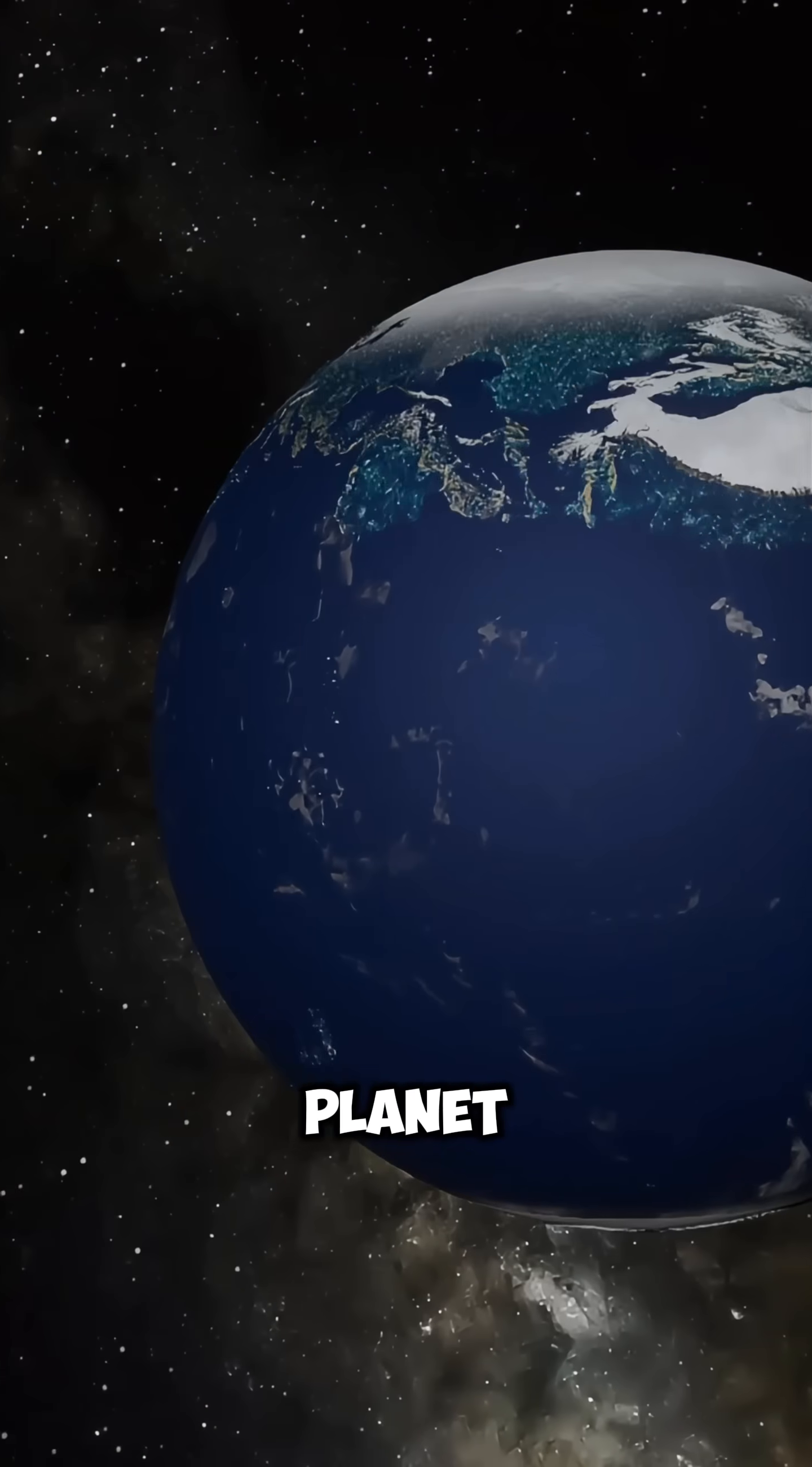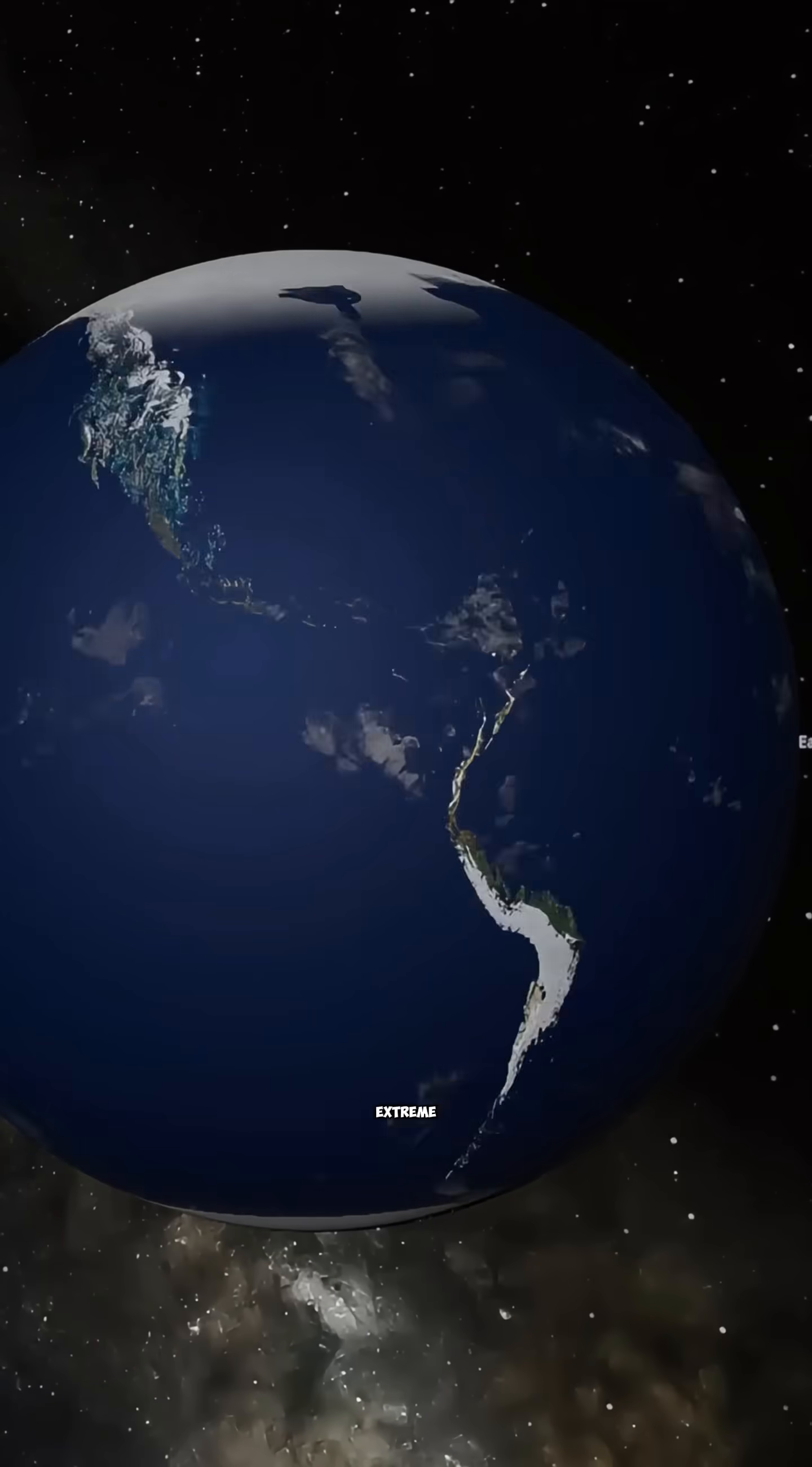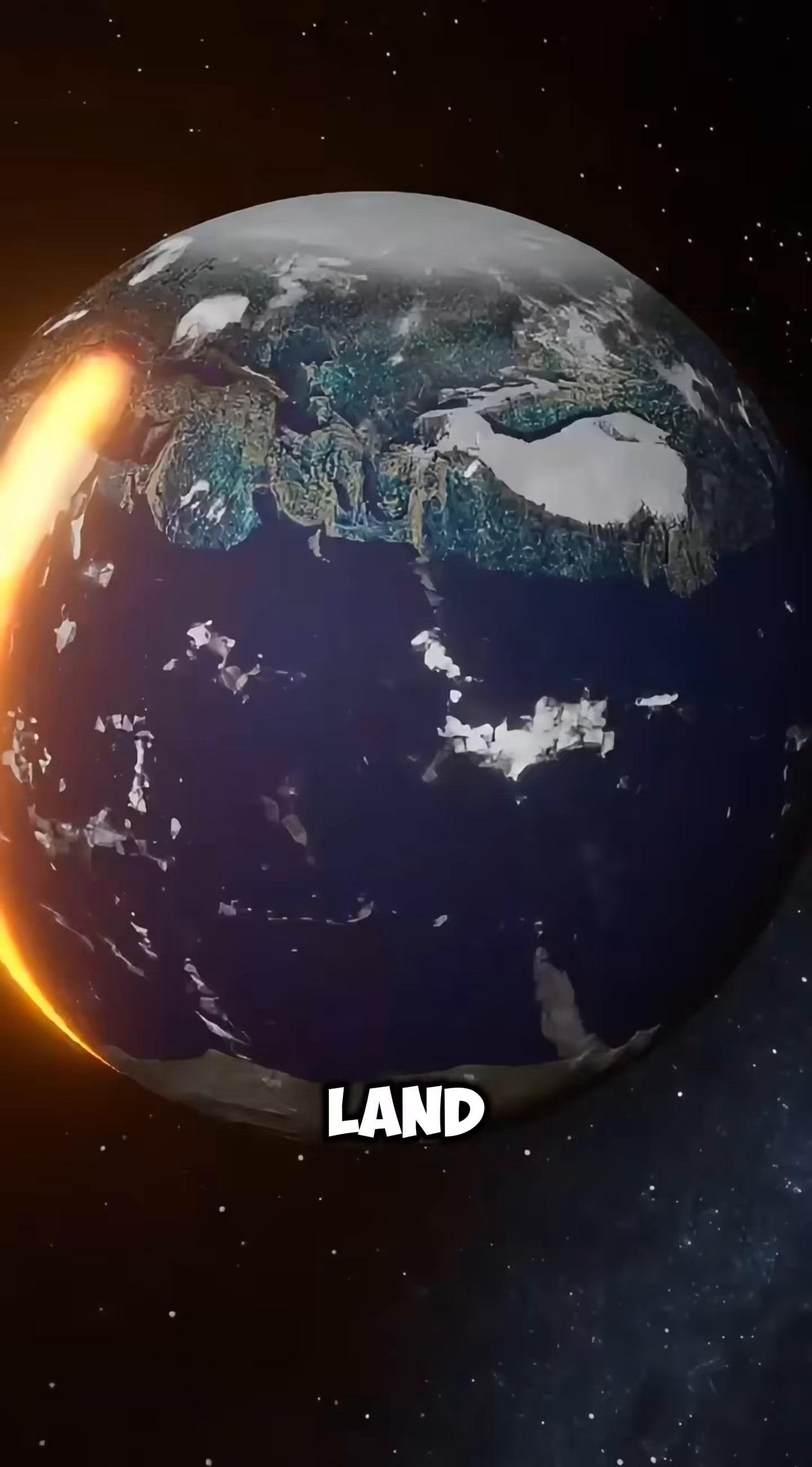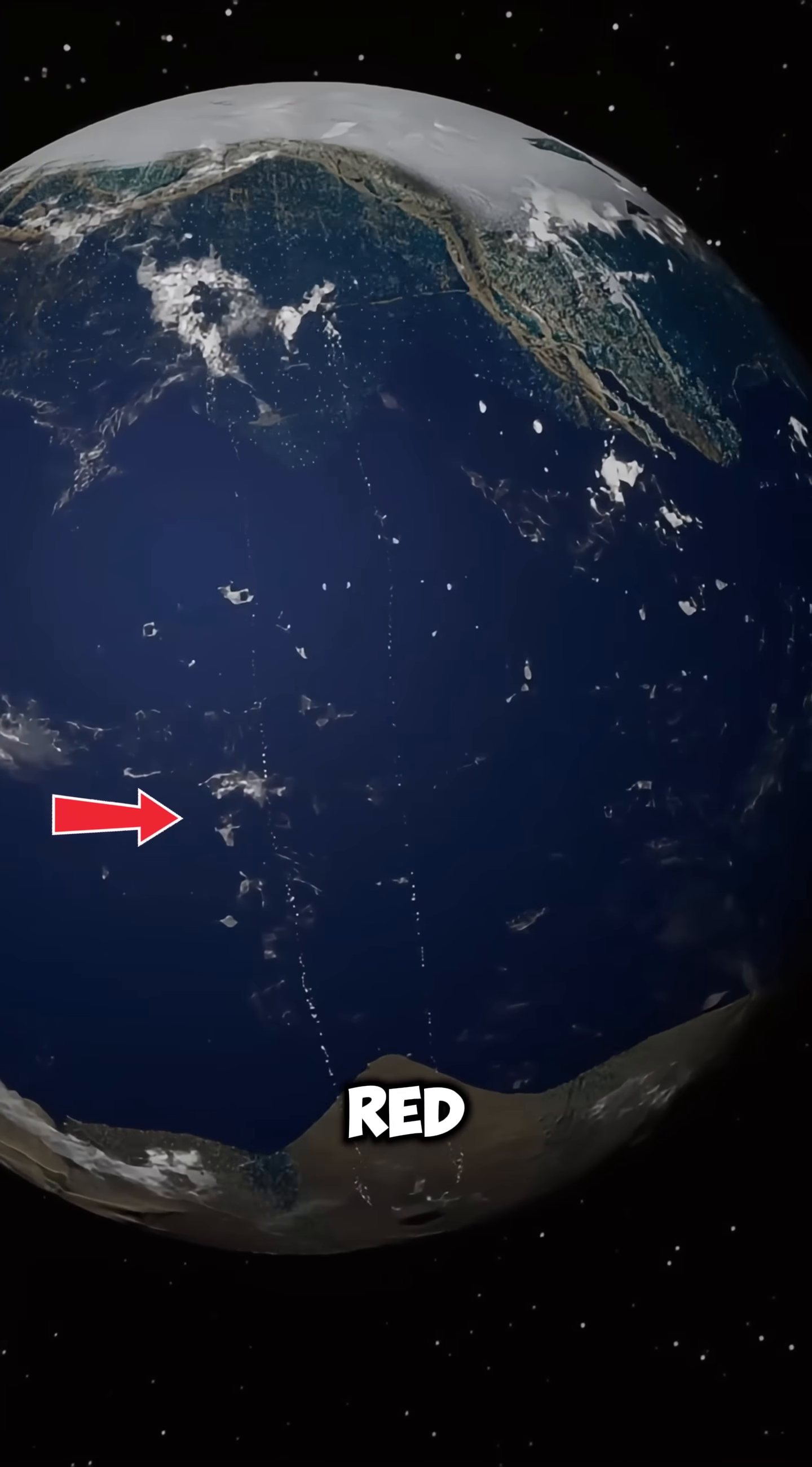something incredible happens. The entire planet becomes covered by oceans, and the extreme heat caused by the rotation creates massive walls of rock and land, dividing the world into our famous Red Line.